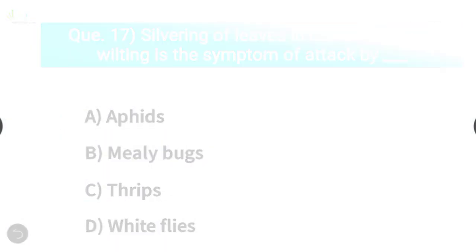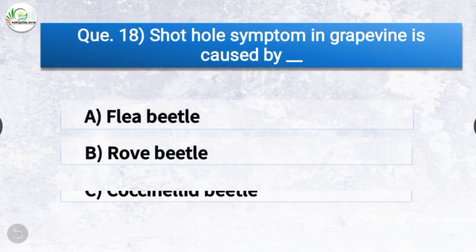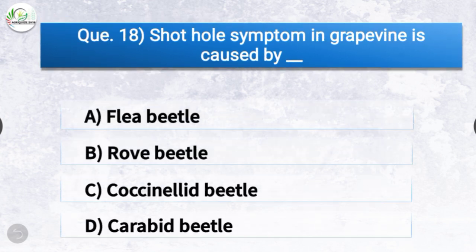Question number eighteen: Shot hole symptom in grapevine is caused by dash. The options are flea beetle, rove beetle, coccinellid beetle, or carabid beetle. The correct answer is option A, flea beetle — shot hole symptom in grapevine is caused by flea beetle.